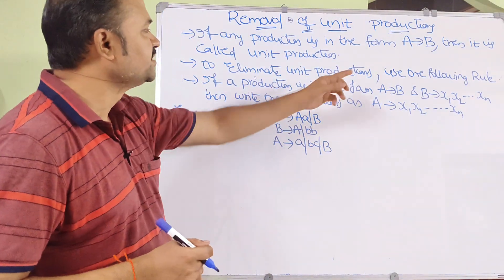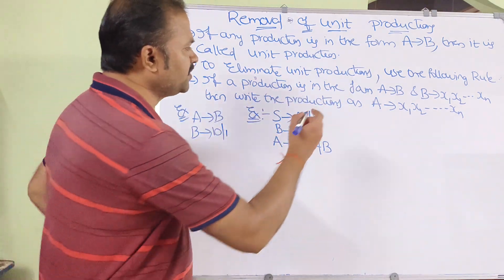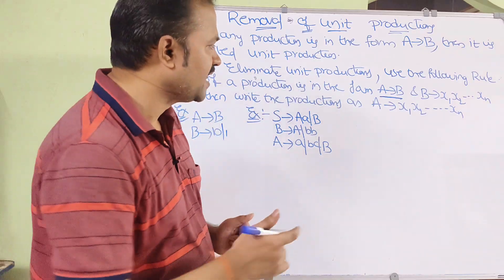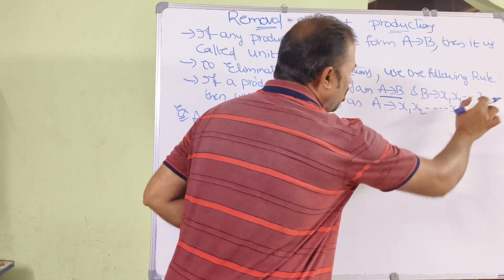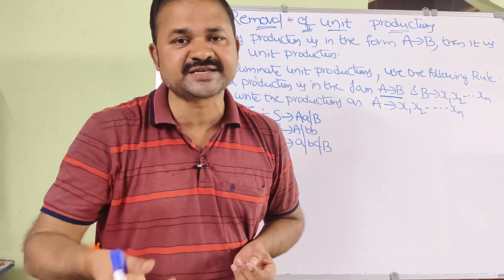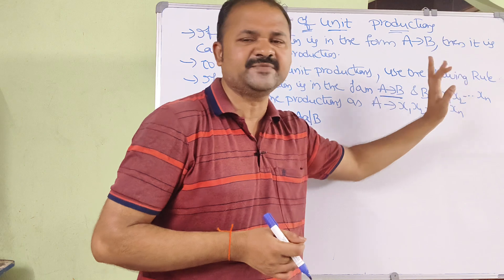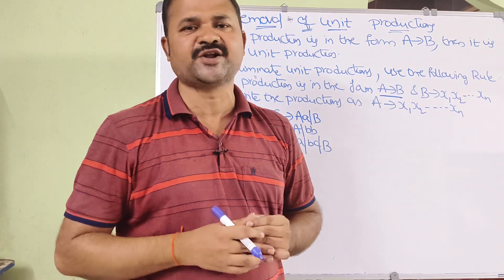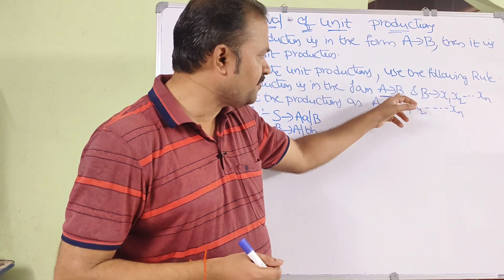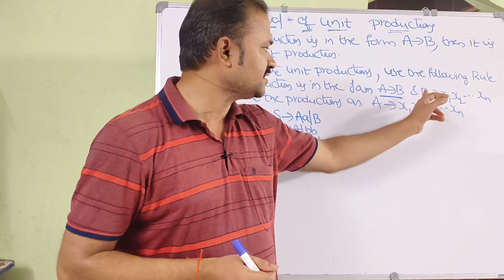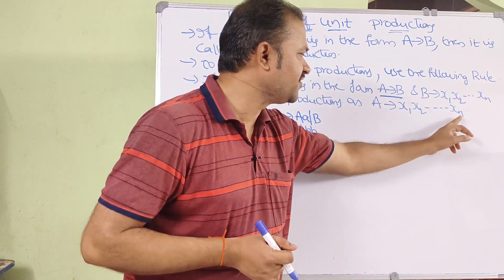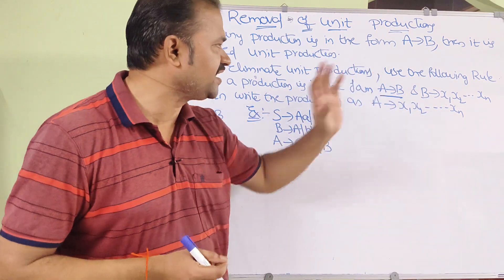To eliminate unit productions, we use the following rule. If a production is in the form A implies B — a unit production — where A is a non-terminal and B is a non-terminal, and B implies X1, X2, ..., Xn (a combination of terminals and non-terminals), then in place of B we write the productions of B. So A implies X1, X2, ..., Xn. In this way we can remove the unit production.